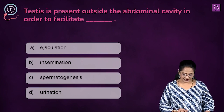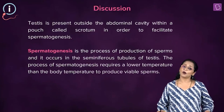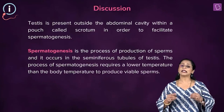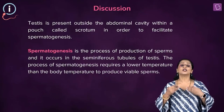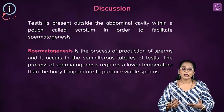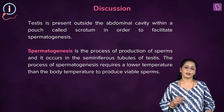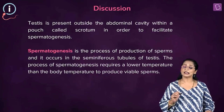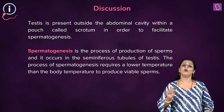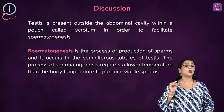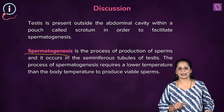The testis, which is part of the male reproductive organs, is present in a sac or pouch-like structure called the scrotum, found outside the body. The testis is the sex organ involved in the formation of sperms, which is called spermatogenesis.